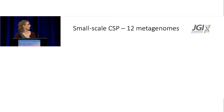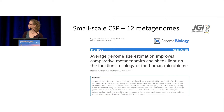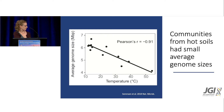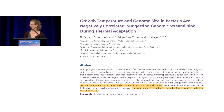Around that time we applied to JGI for a small-scale CSP and were awarded 12 metagenomes to look into the functional potential of these Centralia microbiomes. Importantly, we first accounted for average genome size in our metagenomes before analysis. When we did that, we saw something really interesting: on the x-axis is temperature in Celsius, on the y-axis is average genome size from those metagenomes — and we observed the most beautiful Pearson's correlation I'll ever see as an ecologist. The hotter soils on average had smaller microbial genomes than the ambient temperature soils.